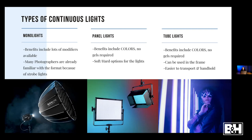Beyond the tube lights, panel lights allow for colors — it's RGB with actual Rosco-type gels built inside. You can choose whether you want 5,600K or 3,200K and then apply a different gel to get a different effect. There are so many different things you can do there.